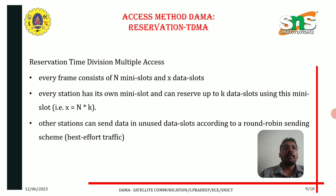Another access method in DAMA is Reservation TDMA — reservation time division multiple access. In this, every frame consists of n mini slots and x data slots. Every station has its own mini slot and can reserve up to k data slots using this mini slot, where x equals n multiplied by k. Other stations can send data in unused data slots according to a round-robin sending scheme.